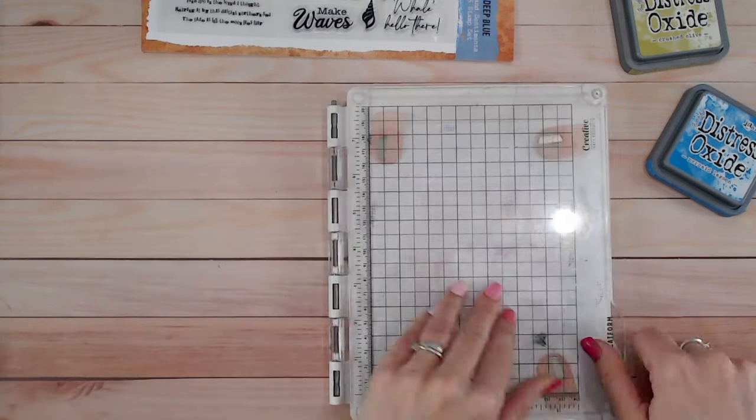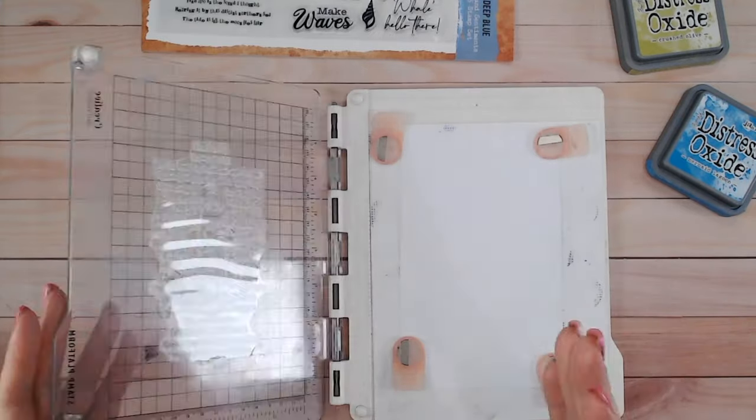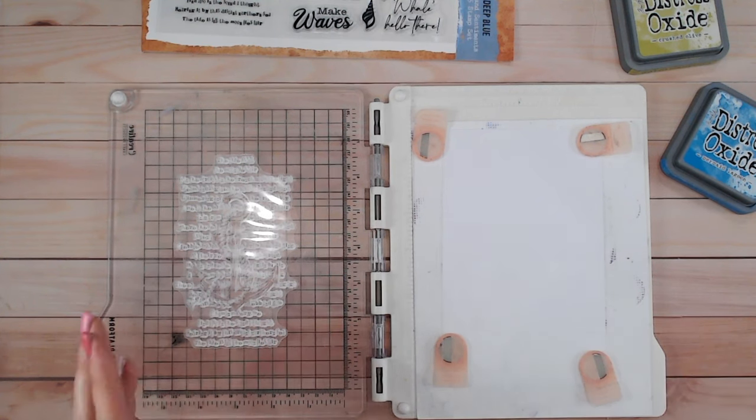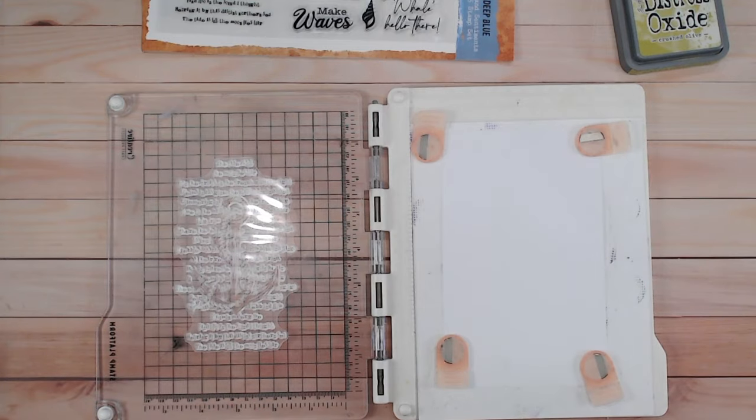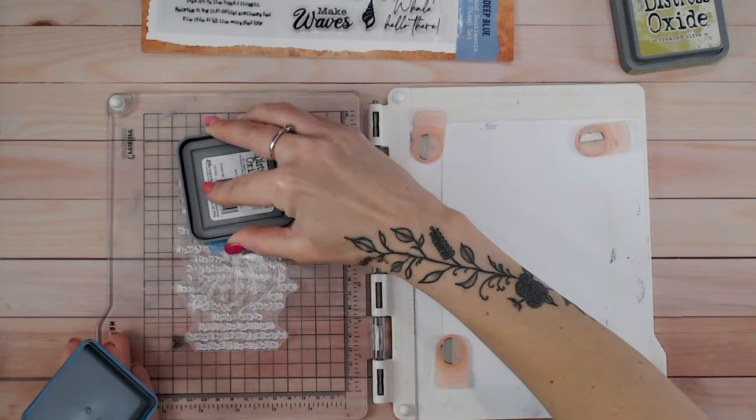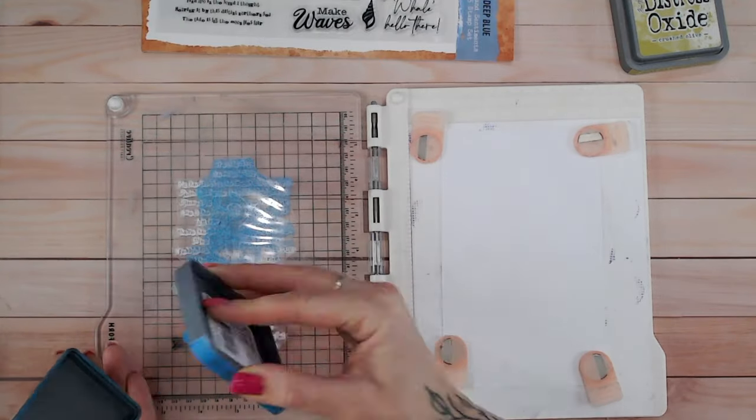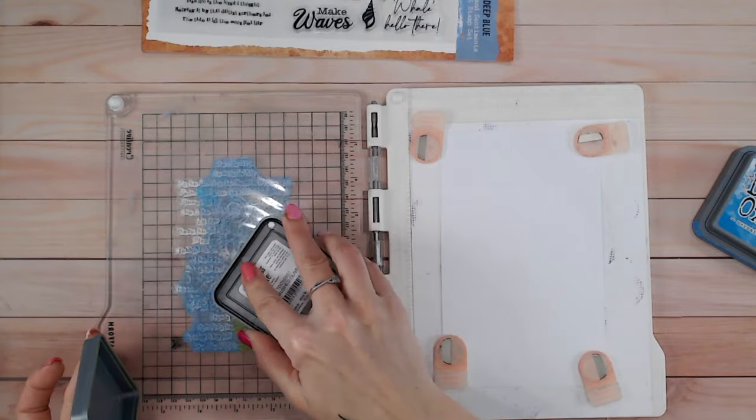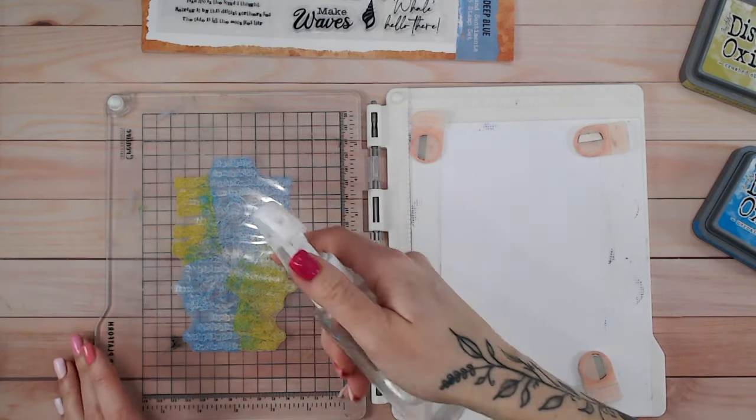I'm going to place this onto my stamping platform the wrong way. So I've actually got the flat side this side and I've got the text and the image stuck to the stamping platform. I'm going to now ink this full solid background with this gorgeous mermaid lagoon color first of all, then crushed olive. Obviously the colors are irrelevant, it doesn't matter which colors you use, choose whatever's going to suit your project.